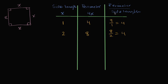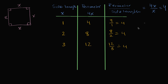I think we see a pattern here — the ratio of perimeter to side length looks like it's always going to be four. If our side length is three, then our perimeter is twelve. Twelve divided by three equals four. This isn't some magical thing, because to figure out the perimeter we're multiplying by four. The perimeter is 4x if the side length is x, and 4x divided by x is always going to be four.